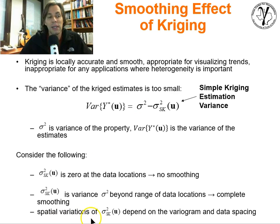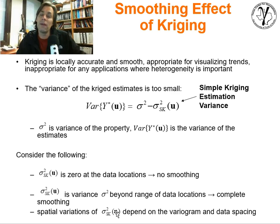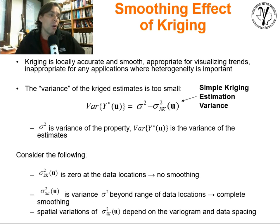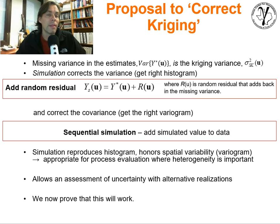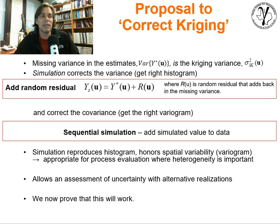Spatial variations and estimation variance at all locations depend on the data and the variogram. Specifically, the variogram range is going to be very important — that'll tell you whether or not you have some correlation. And the nugget effect will be important too — it'll tell you whether or not you jump up in estimation variance as soon as you get away from data.